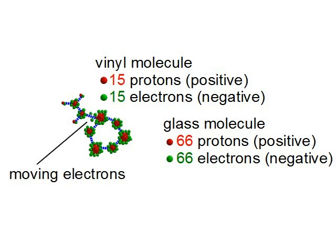But most importantly, when the bond is formed, electrons move from the glass molecule to the vinyl. In this case, three electrons are changing places.